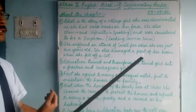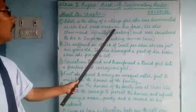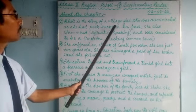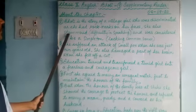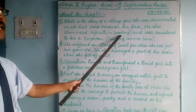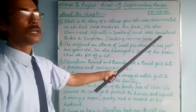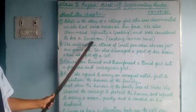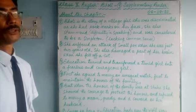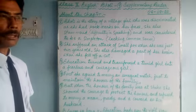Bholi had pock marks on her face — pock marks are the marks left after a wound or scar gets healed, especially due to chickenpox or smallpox. She also stammered, meaning she had difficulty speaking and used to repeat the same word two or three times. She was also considered a simpleton, meaning she lacked common sense, and was discriminated against not only in the neighborhood but also at home.